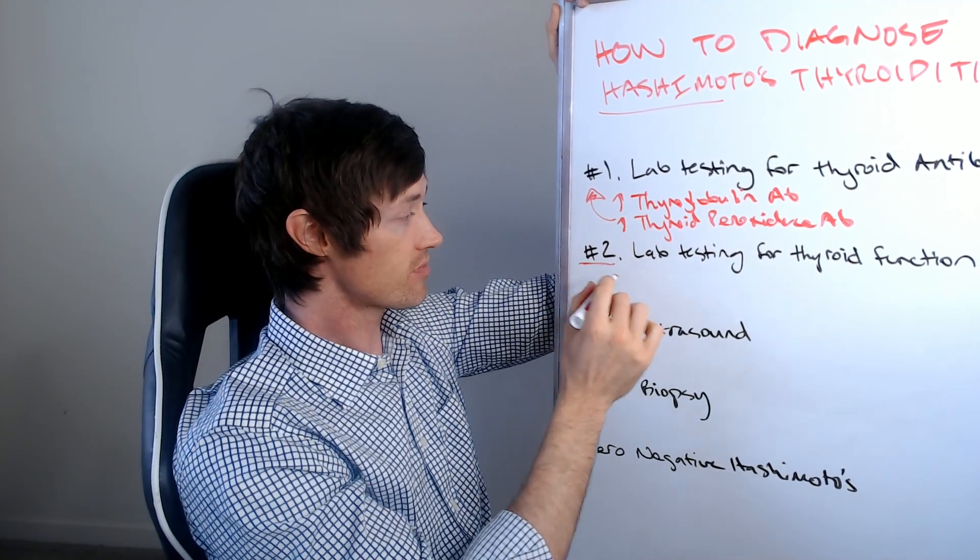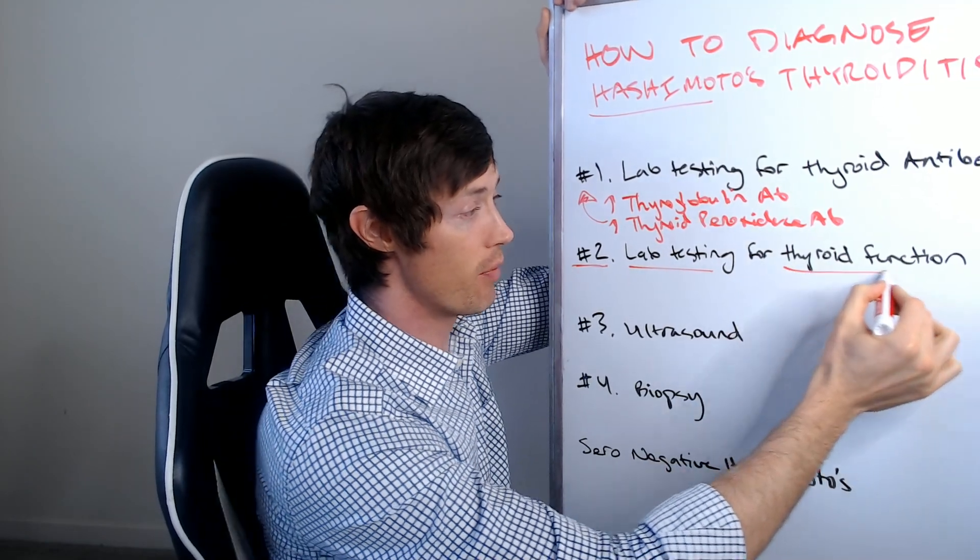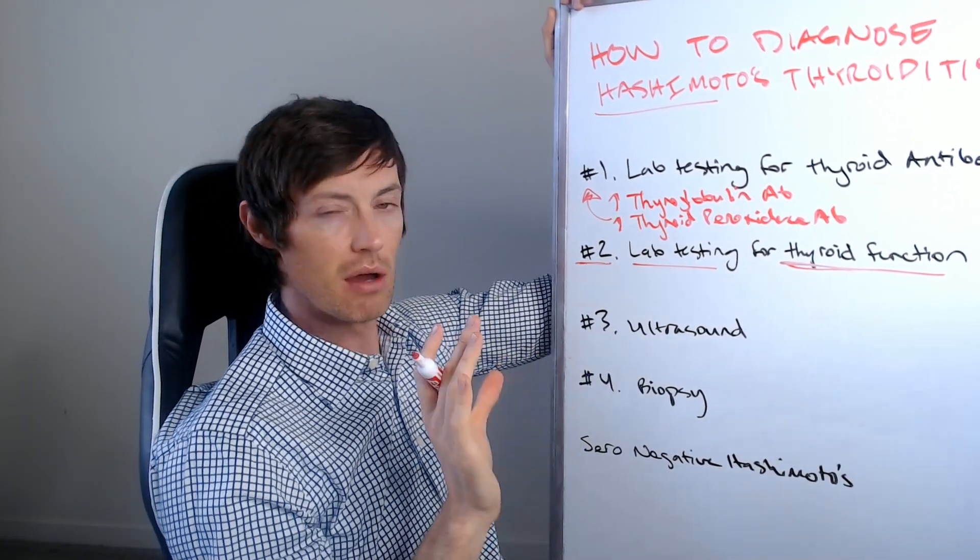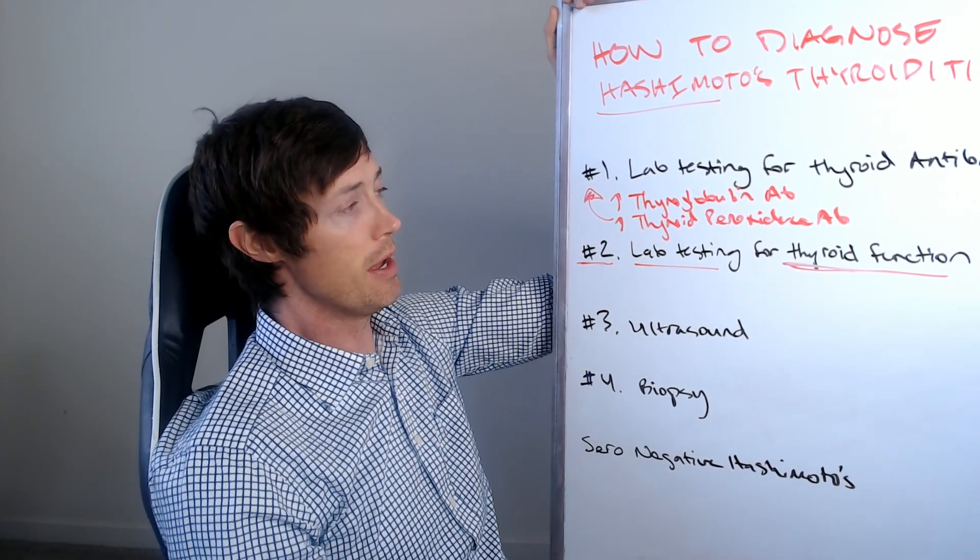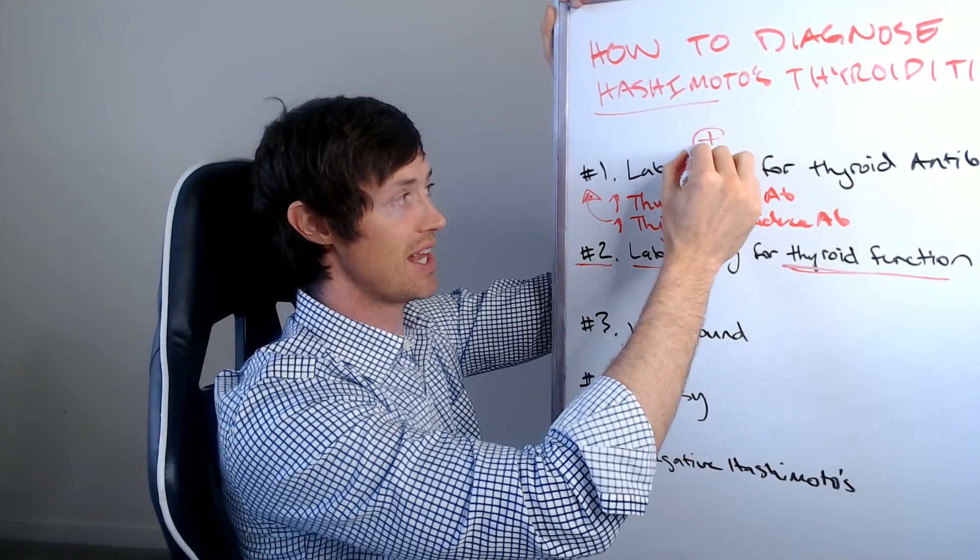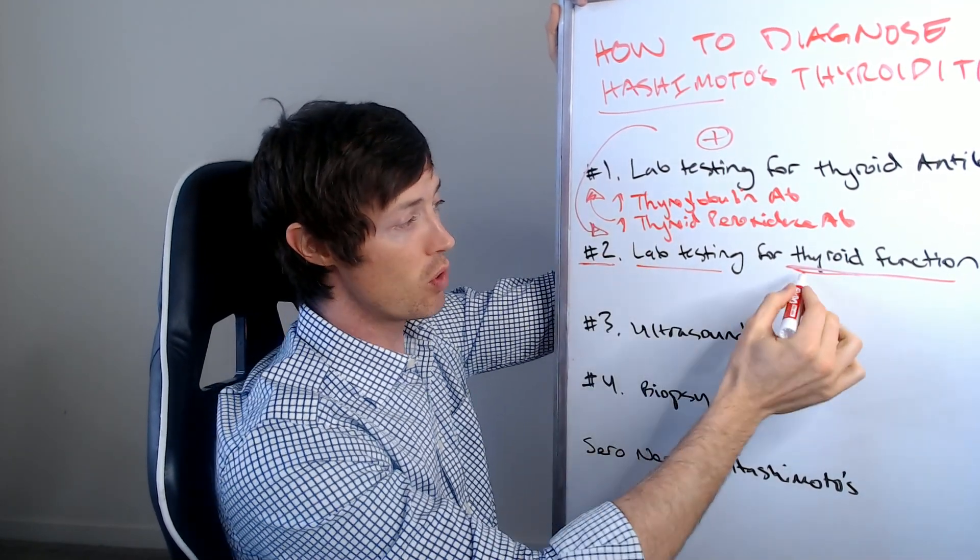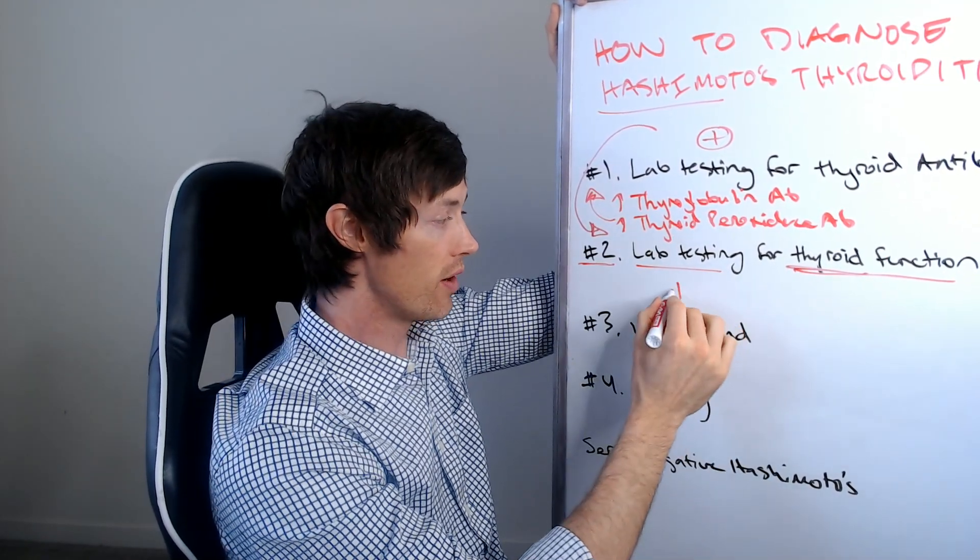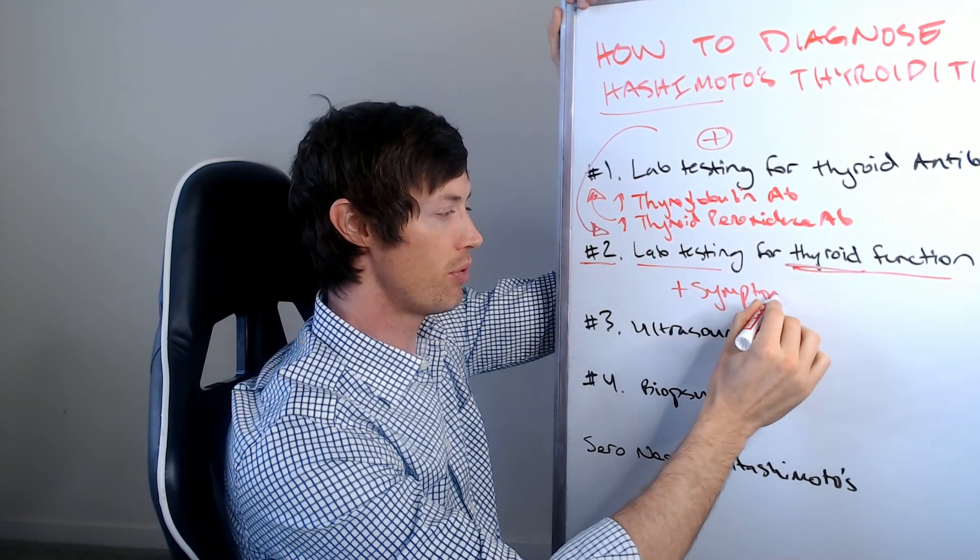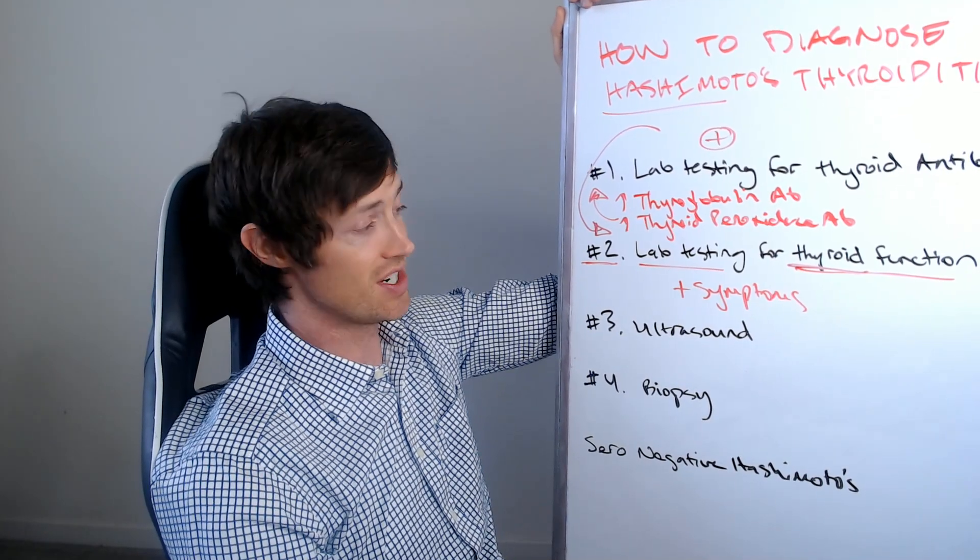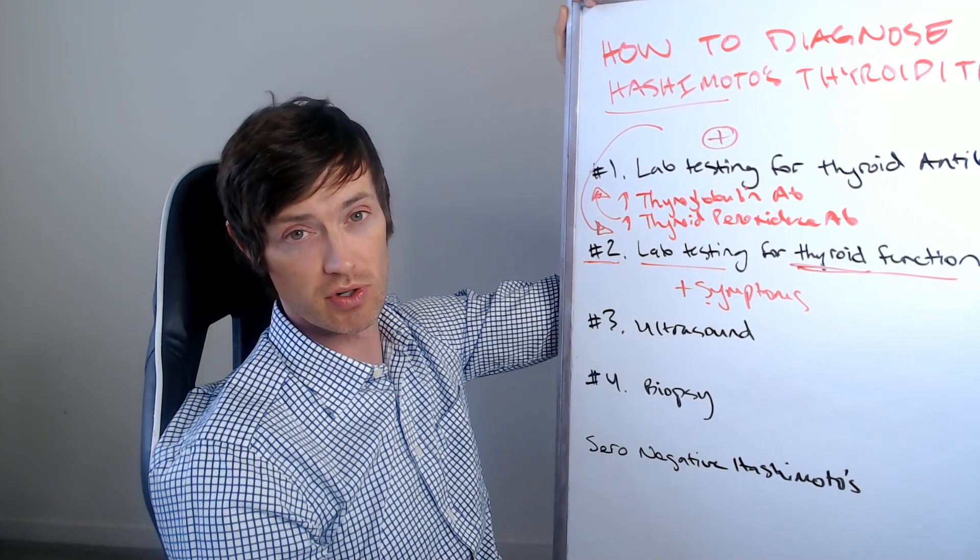Which brings us to number two, and that is lab testing for thyroid function. If you have a positive set of lab tests for thyroid antibodies and now you have either abnormal thyroid lab tests or thyroid symptoms, then you can pretty much adequately say with a 99.9% degree of certainty that that person has Hashimoto's thyroiditis.